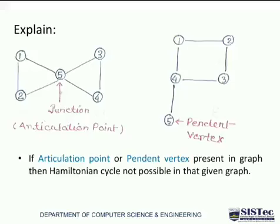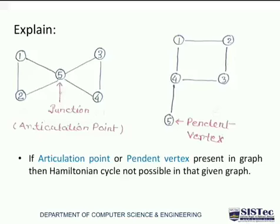Two more examples. In the first example, you can see that vertex 5 is an articulation point (Johnson point). Starting from vertex 1: 1 to 2, 2 to 5, 5 to 4, then 4 to 3. First condition satisfied — all vertices visited. But from vertex 3, is there a direct path from 3 to 1? No. So we can conclude that if any graph has an articulation point, it would not generate a Hamiltonian cycle.